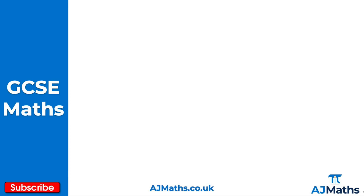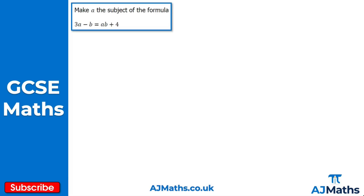Let's look at question one: make a the subject of 3a - b = ab + 4. Writing down the equation: 3a - b = ab + 4. To make a the subject, I need to get everything involving a on one side. I have 3a on the left and ab on the right, so I'm going to subtract ab from both sides, giving 3a - ab - b on the left hand side.